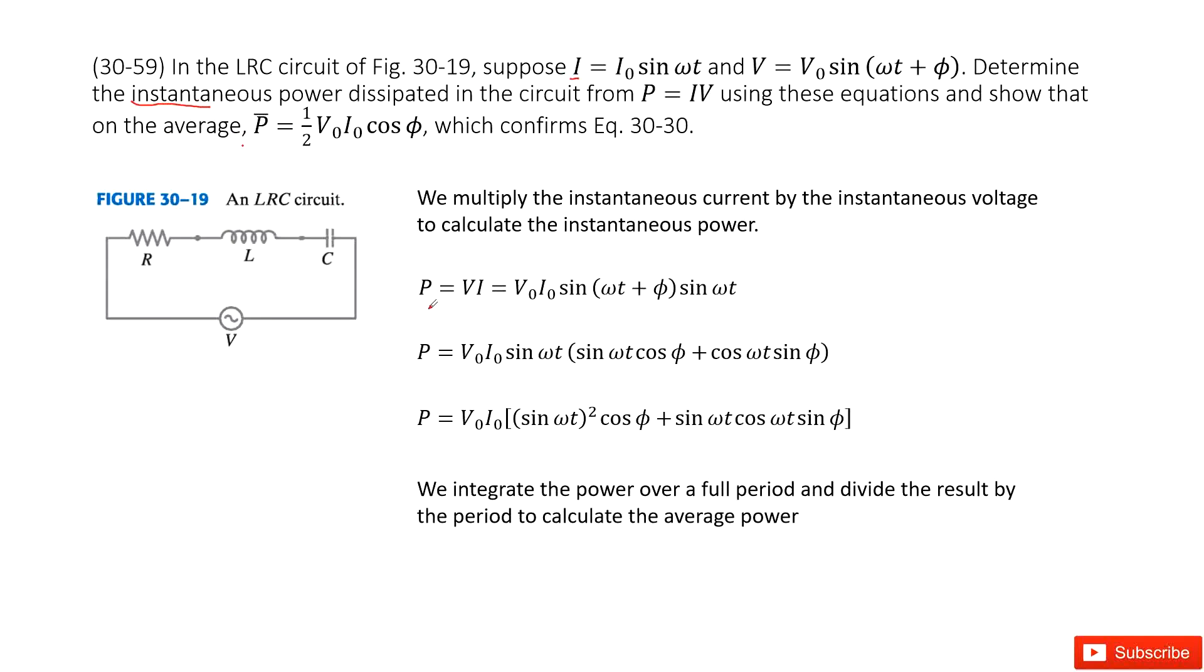The instantaneous power we can see is, you just use I times V. So I times V, we input the function for i and v inside. We put the i and v inside and we can get the function that looks like this one.